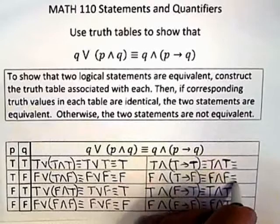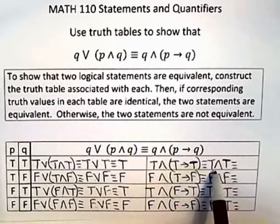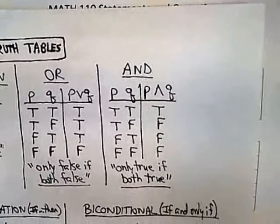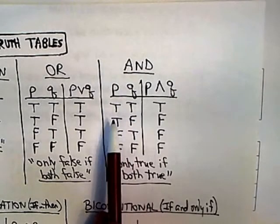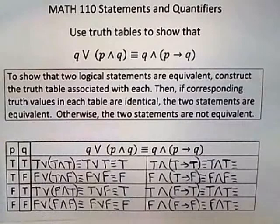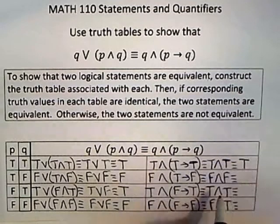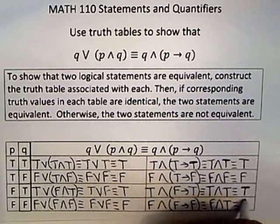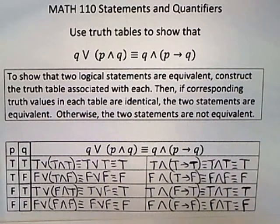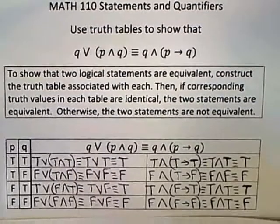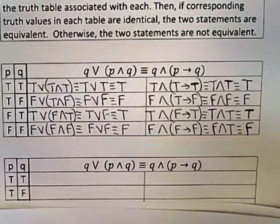Almost done — it's tedious but not difficult. Now we're dealing with an AND again. For an AND, it's only true if both are true. So going back: they're both true in the first case — true — and both true in the third case — true — but not both true in any other place, so those must be false. The final column for the right-hand side is: true, false, true, false.